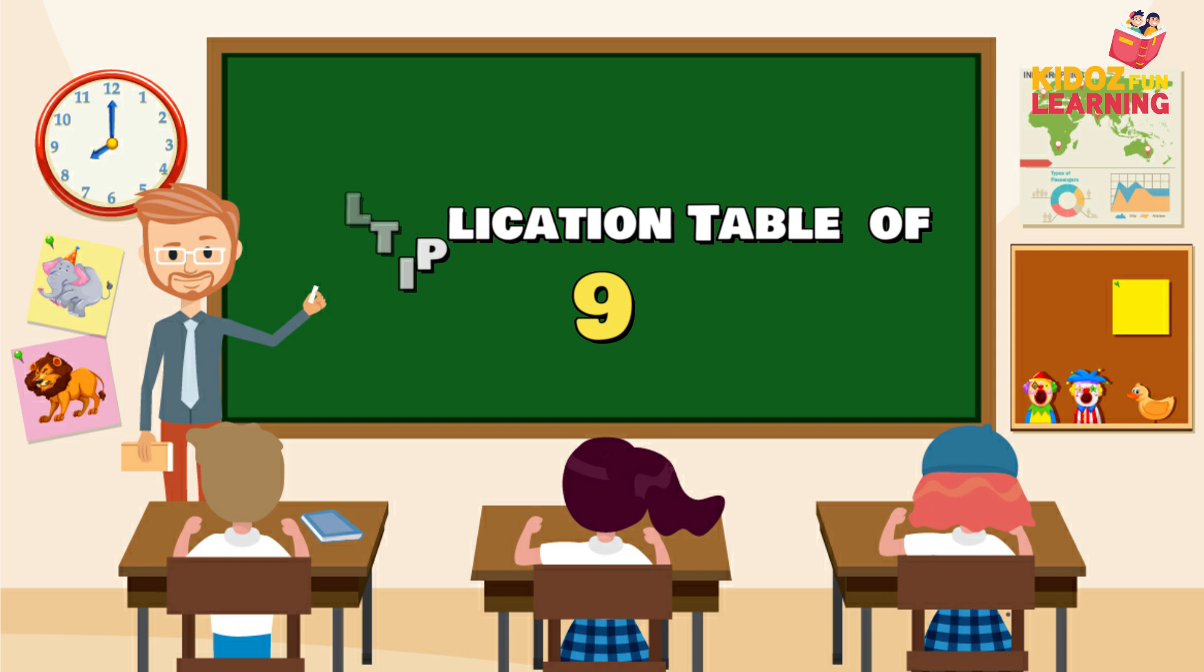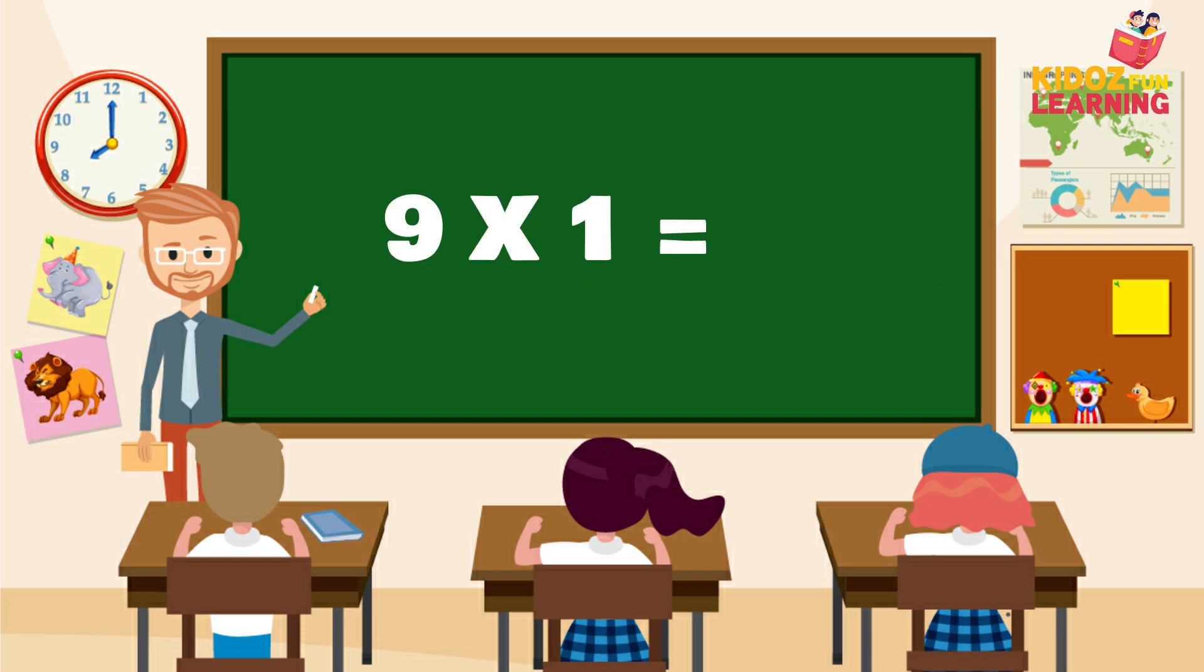Multiplication table of 9: 9 ones are 9, 9 twos are 18.